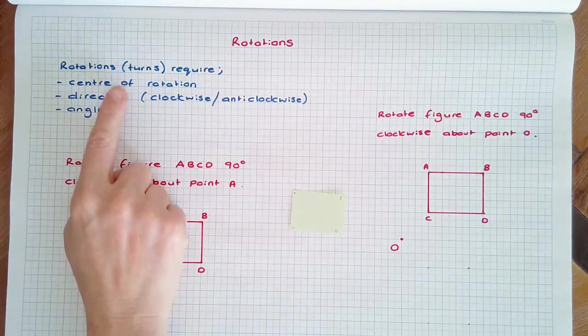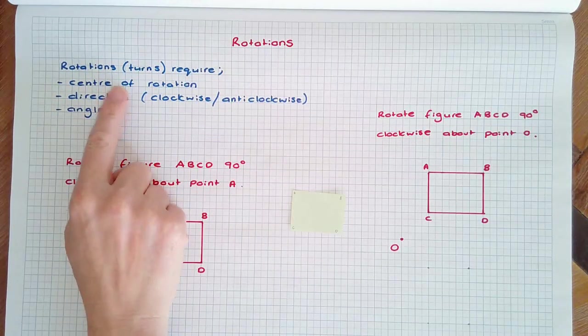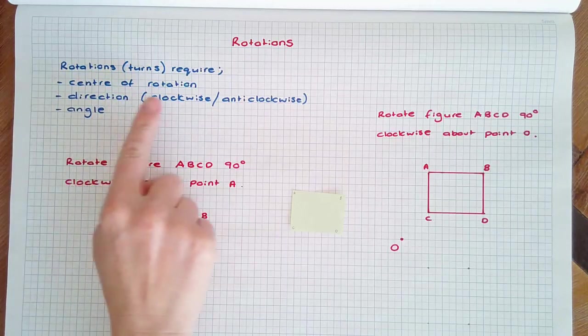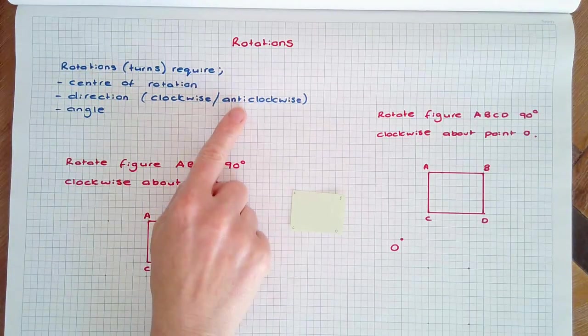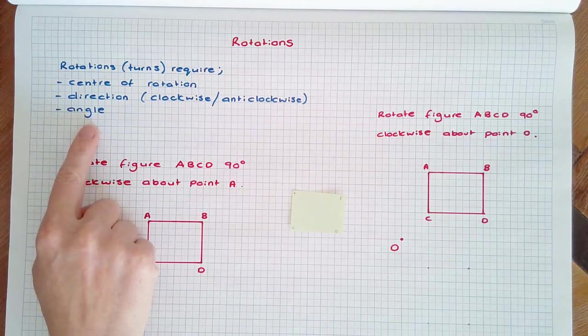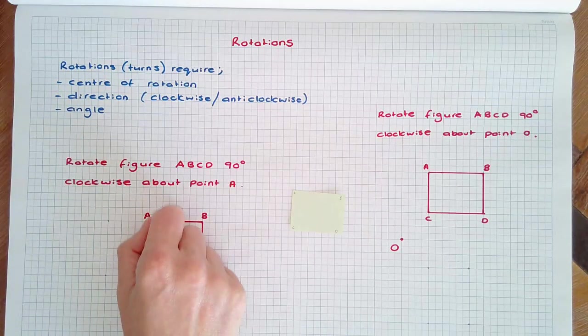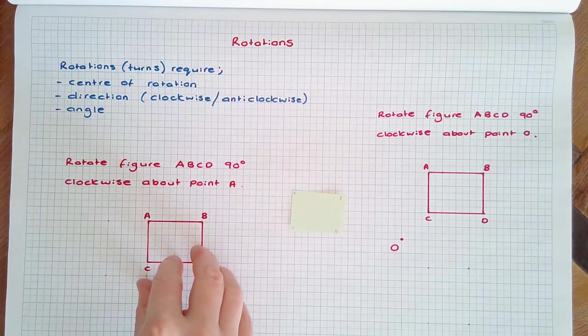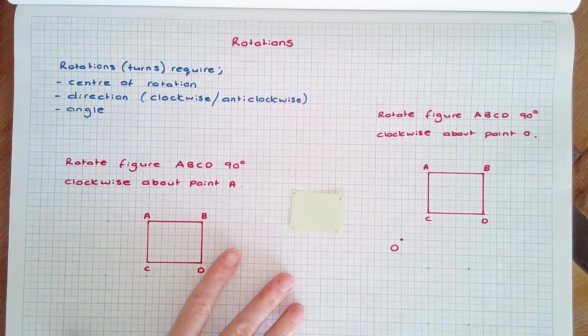Rotation requires a known centre of rotation, a direction of rotation being clockwise or anticlockwise, and the angle of rotation. Rotations can be shown on special graph paper called polar or circular graph paper. In this video I will just demonstrate rotation on square grid.